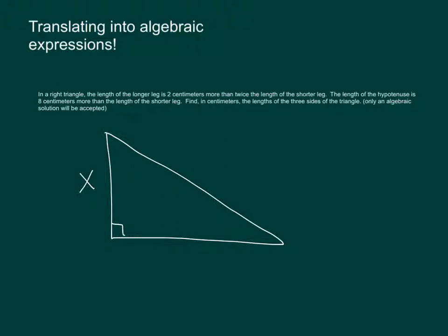The hypotenuse is 8 centimeters more than, more than means plus. So the hypotenuse will be x plus 8, and the longer leg is 2 more than twice the length of the shorter leg. So that's 2x plus 2.